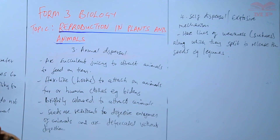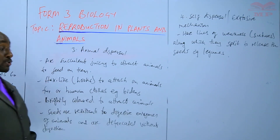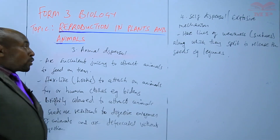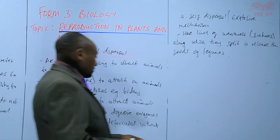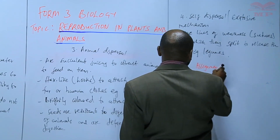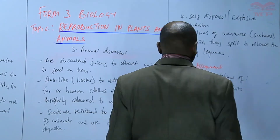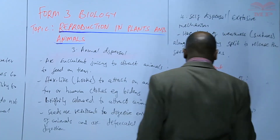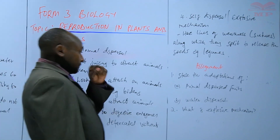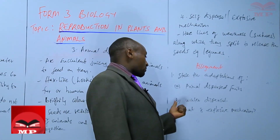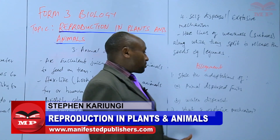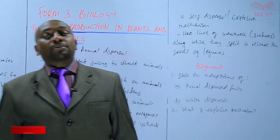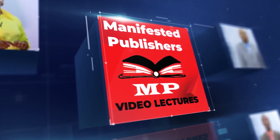So those are the four agents of dispersal of fruits and seeds: wind, water, animal, and self-dispersal, also known as the explosive mechanism. For the assignment: question one, state the adaptations of (a) animal-dispersed fruits and (b) water-dispersed fruits. Question two, what is explosive mechanism? We'll stop there until next time.